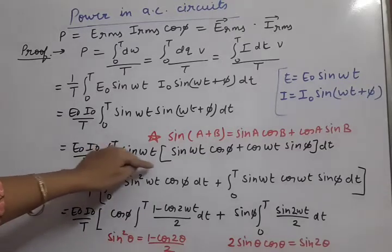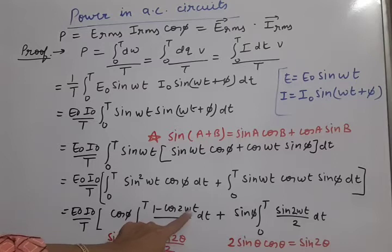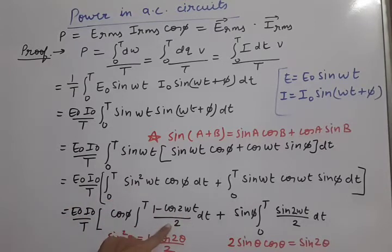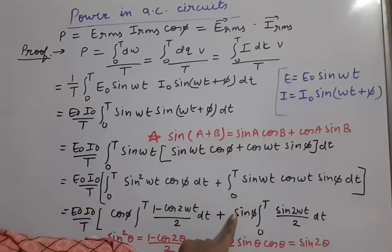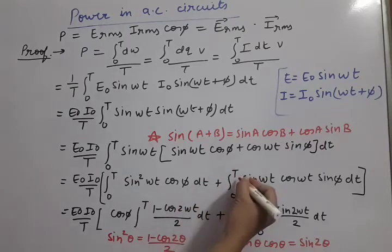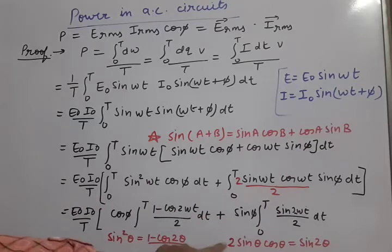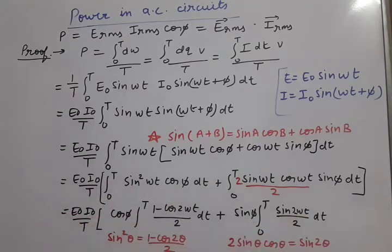Applying the identity, sin²(ωt) becomes (1 − cos 2ωt)/2. For the second integration, sin φ is also constant and taken out. For sin(ωt)·cos(ωt), we multiply and divide by 2: since 2 sin θ cos θ = sin 2θ, so 2 sin(ωt) cos(ωt) = sin(2ωt), divided by 2. This properly converts everything into simple integrable forms.